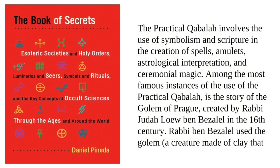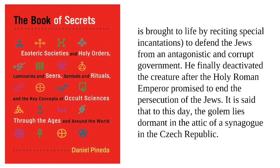The practical Kabbalah involves the use of symbolism and scripture in the creation of spells, amulets, astrological interpretation, and ceremonial magic. Among the most famous instances of the use of the practical Kabbalah is the story of the Golem of Prague, created by Rabbi Judah Loew Ben Bezalel in the 16th century. Rabbi Ben Bezalel used the Golem — a creature made of clay that is brought to life by reciting special incantations — to defend the Jews from an antagonistic and corrupt government.